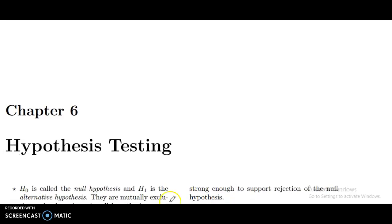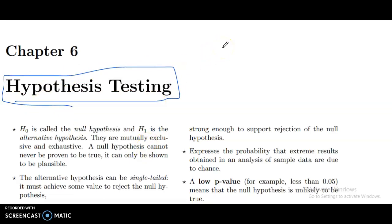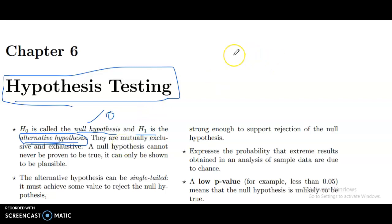Now we are going to discuss hypothesis testing. H0 is called the null hypothesis and H1 is the alternative hypothesis. Null means zero, but the alternative solution is there. They are mutually exclusive and exhaustive.